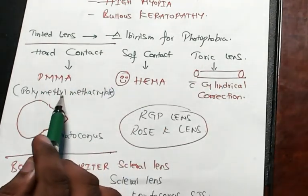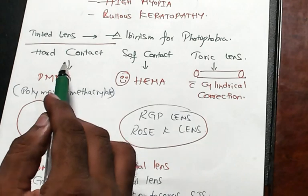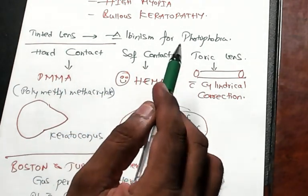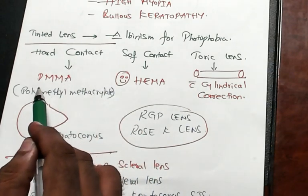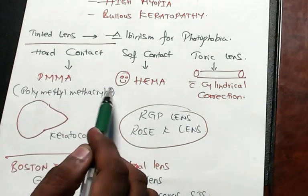What are the types of lens? Hard contact lens, soft contact lens, and toric lens. Hard contact is made up of PMMA, which is polymethyl methacrylate.